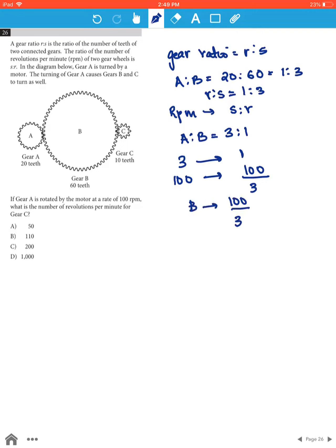Now the gear ratio for B to C will be 60 to 10, which is 6 to 1.